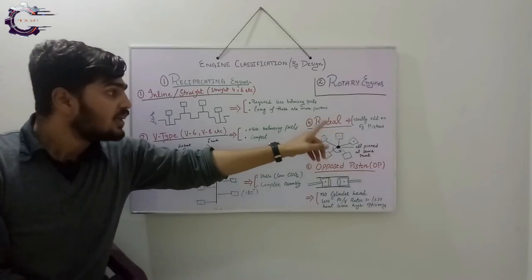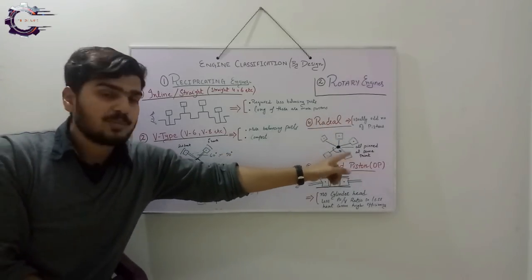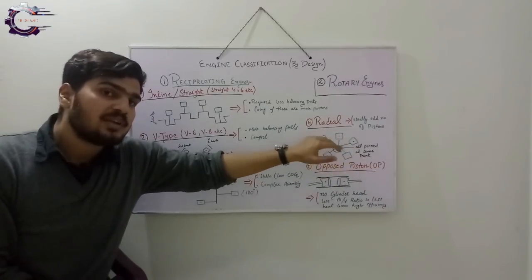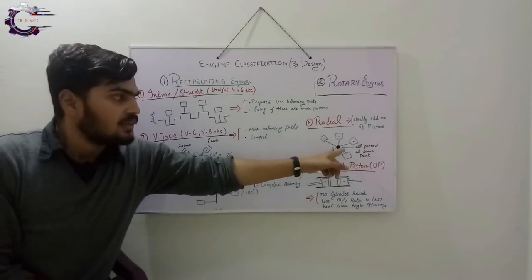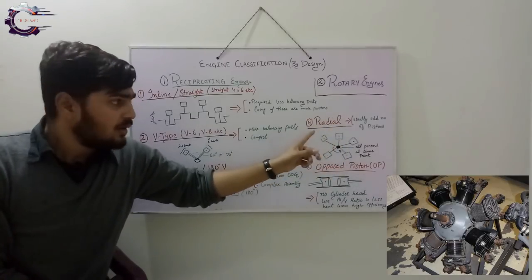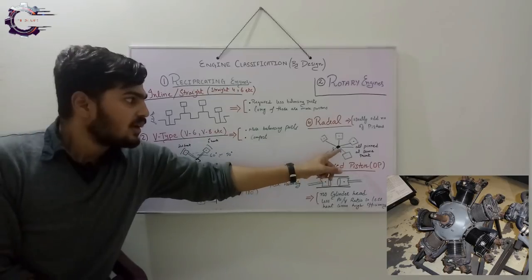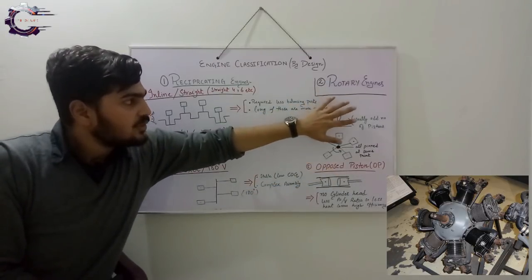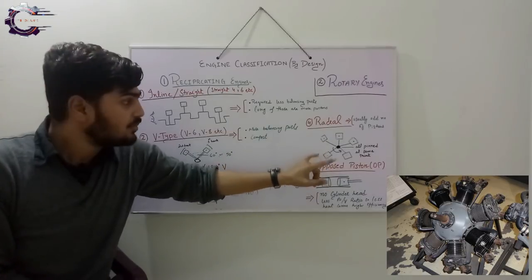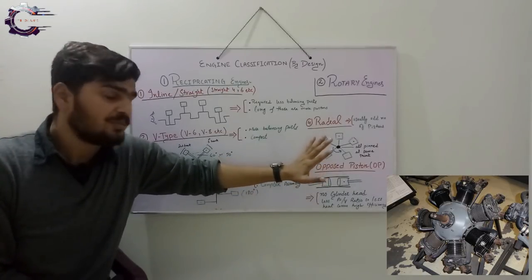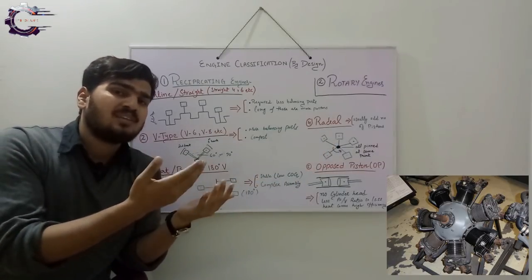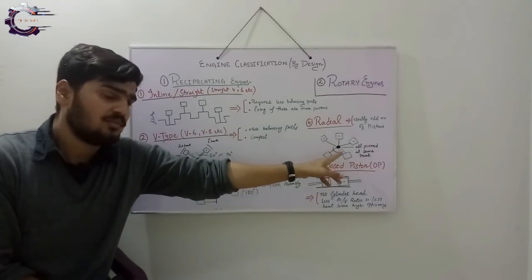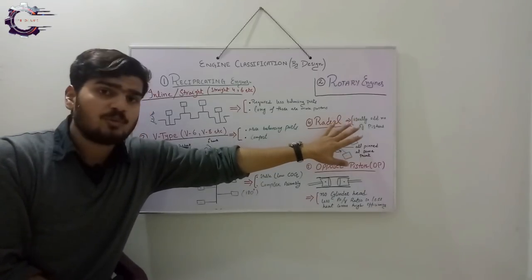Now coming towards the radial type of engines. The radial here is only indicating the arrangement of the pistons — the pistons are arranged in a circular manner, but all the pistons still reciprocate to produce the power. The crankshaft will rotate, and all the pistons are pinned at a single point that eventually rotates the crankshaft. Radial engines usually have odd numbers of pistons — as you can see in this diagram, this engine has five pistons — because of the balanced firing orders and balanced force distribution along the crankshaft.